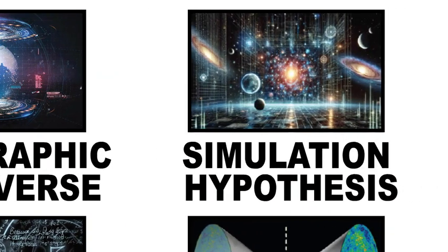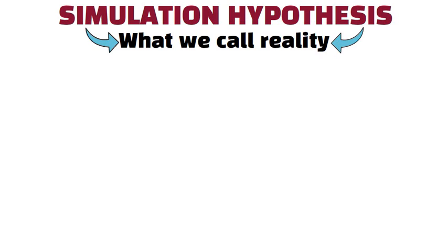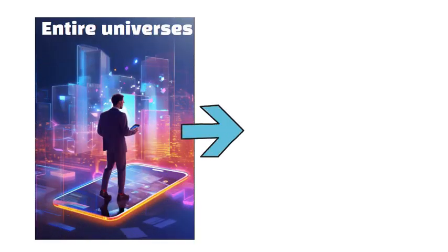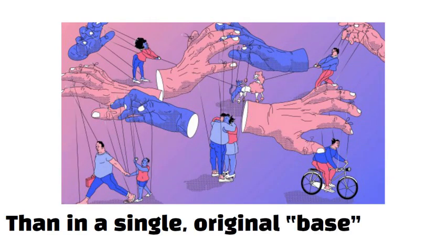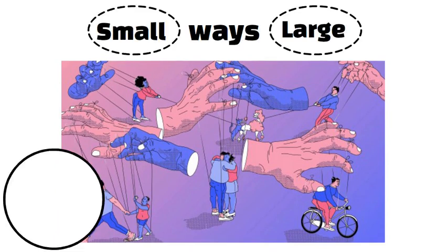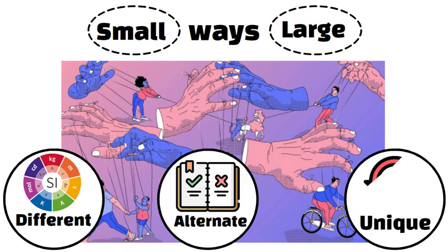Simulation Hypothesis. The simulation hypothesis proposes that what we call reality is an advanced computer program, possibly run by beings with immense computing power. If a civilization ever becomes advanced enough to simulate entire universes, they might create many. That means it's statistically more likely we're inside a simulation than in a single original base reality. Each simulation could differ in small or large ways: different fundamental constants, alternate physical rules, or unique histories. In other words, a single advanced society could run countless parallel universes.